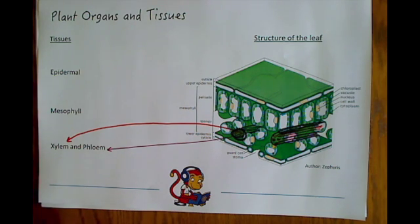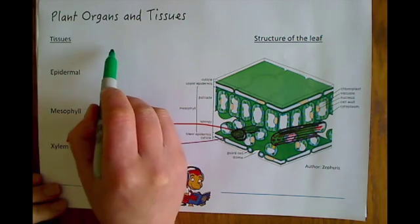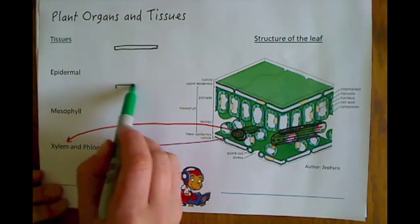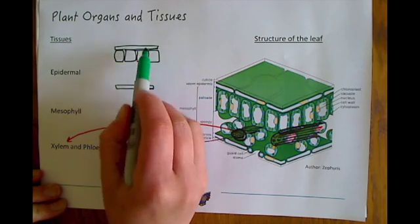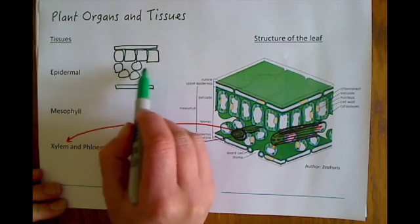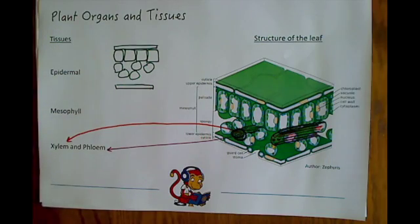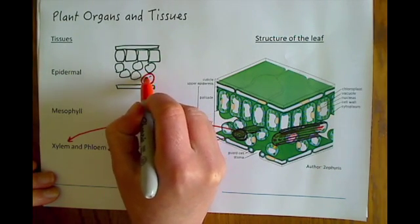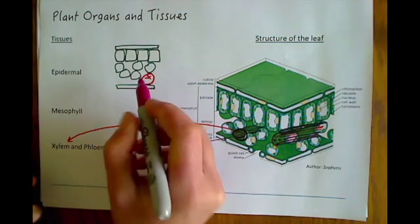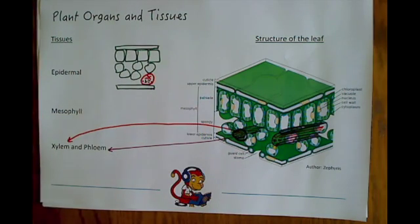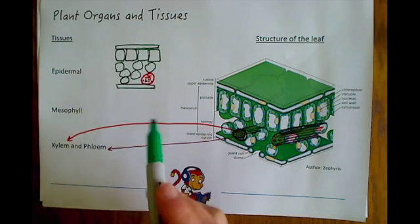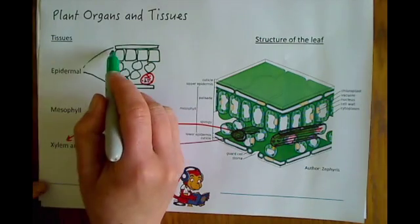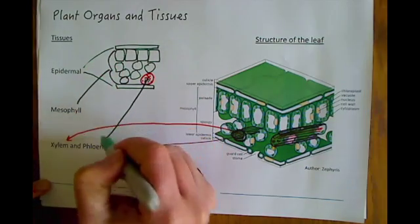We need to be aware that you might get a different diagram in your test. For example, you might not get a 3D diagram — you might get a 2D diagram showing the epidermal layers, then the palisade cells, the spongy mesophyll to allow gases to diffuse through, and then perhaps the xylem and phloem vessel as well. Just bear in mind that you might get either format.